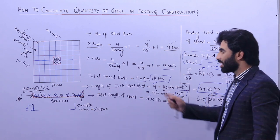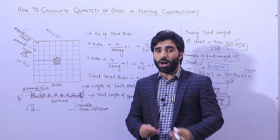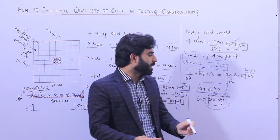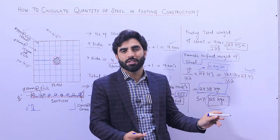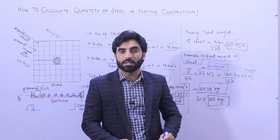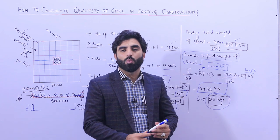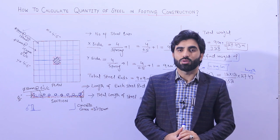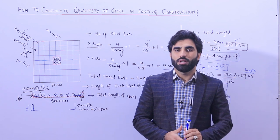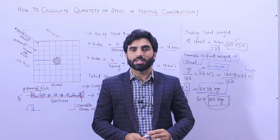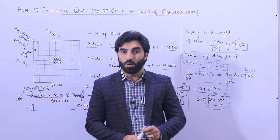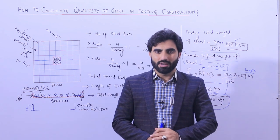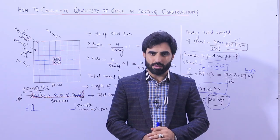So we require approximately 25 kg of steel rods to construct this RCC footing. If you have multiple footings, multiply 25 kg by the number of footings to get the total weight of steel in kg. That concludes today's topic on how to calculate the quantity of steel in an RCC footing. Hope this short video helps you — thanks for watching, see you in the next video, goodbye.